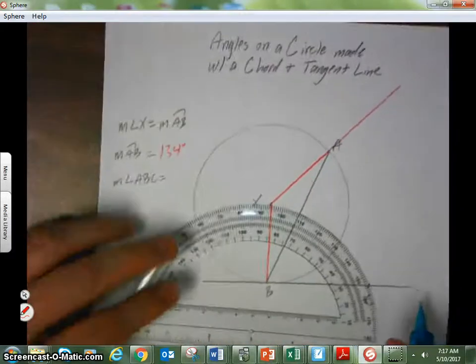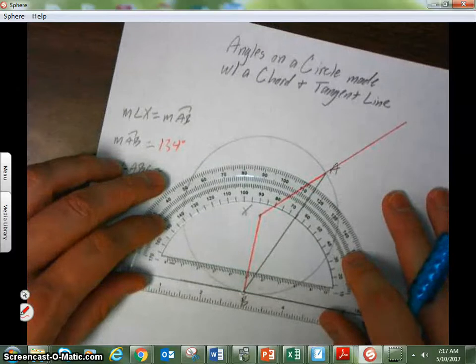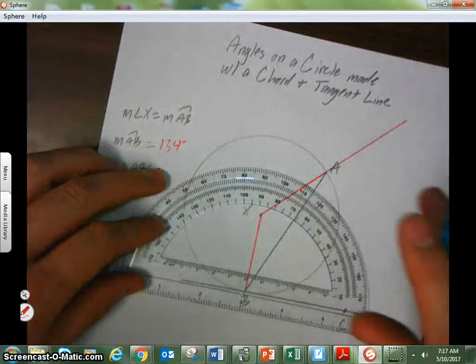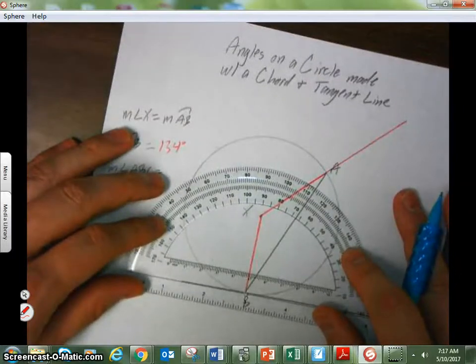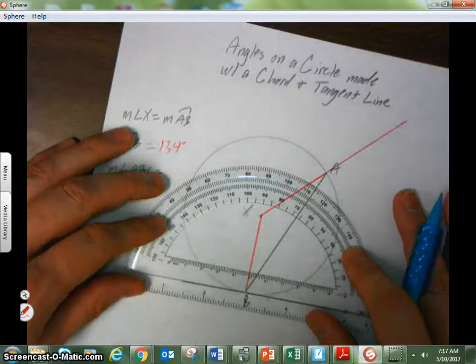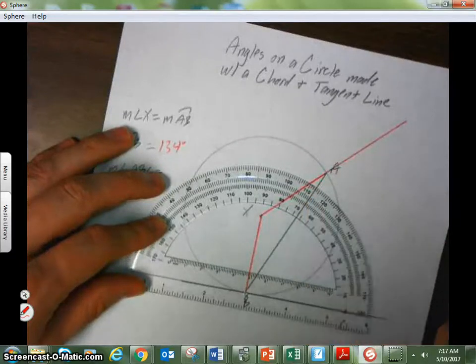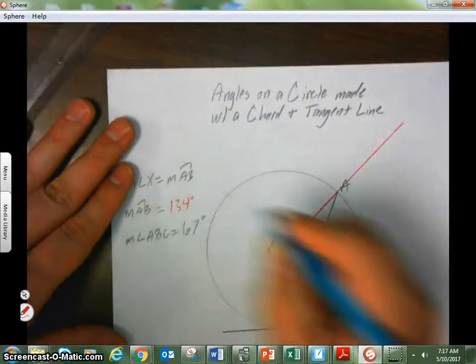And now we'll measure the angle formed between the chord and the tangent. And let's see, when we measure that, that looks to me right about 65, 66, 67 degrees.